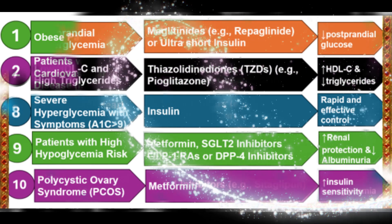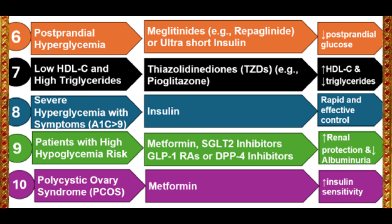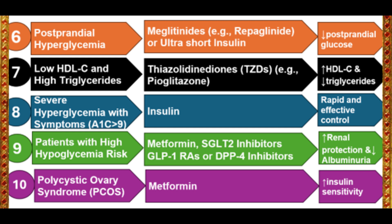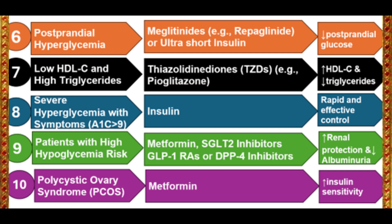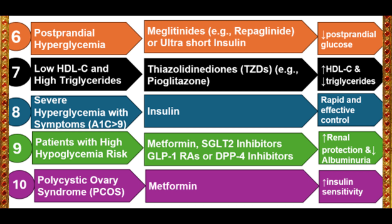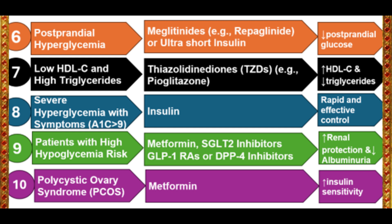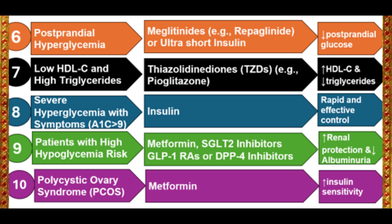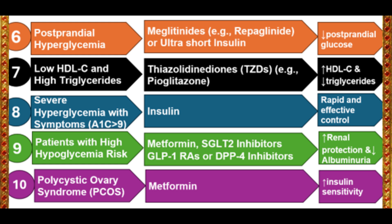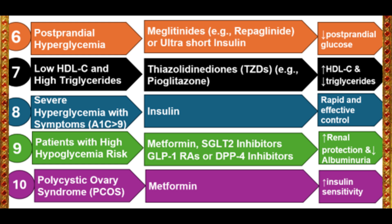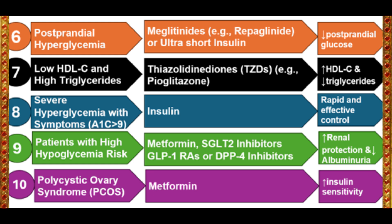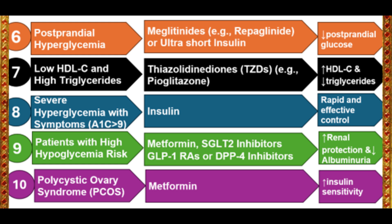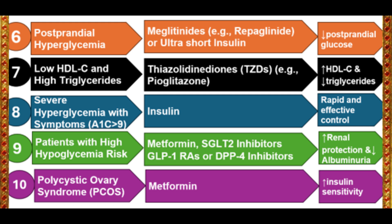Case 6 – Postprandial Hyperglycemia. For managing postprandial hyperglycemia, Meglitinides such as repaglinide, or alpha-glucosidase inhibitors like acarbose, are effective. They specifically target postprandial glucose excursions.